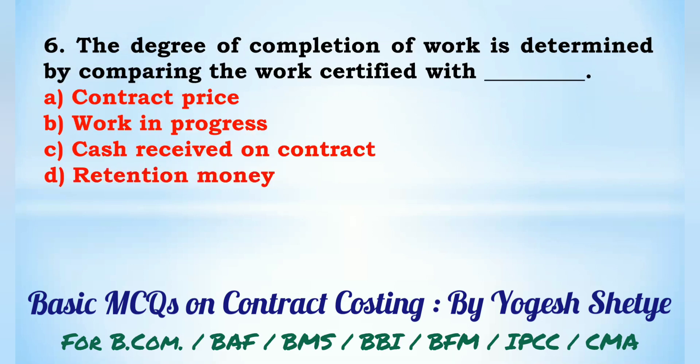Question 6: The degree of completion of work is determined by comparing the work certified with — (A) contract price, (B) work in progress, (C) cash received on contract, (D) retention money. The degree of completion is determined by comparing work certified with contract price. Answer: A.